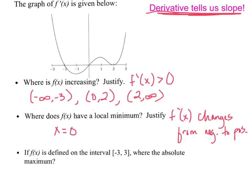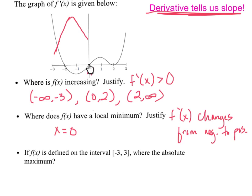Finally, if f is defined on the interval from negative three to three, where is the absolute maximum? When we talk about absolute maximums, usually we check endpoints and use the original function. I didn't give you the original function, so let's talk it through. We start at negative three and we've got a positive derivative, so the function just keeps increasing. Then we hit a maximum and it decreases for a little bit — not a lot. The area tells us how much it decreased. It decreases until zero. Then it begins to increase again because we've got a positive derivative, and it increases to two, then levels, and then increases some more.